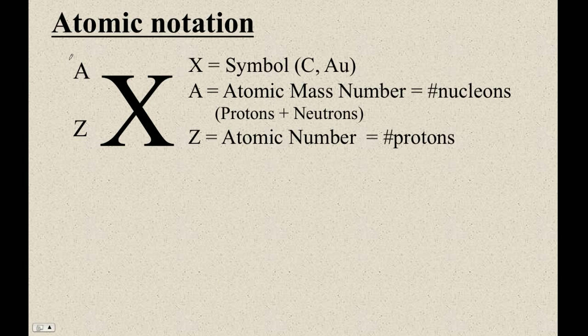Let me show you how, in physics, we write and specify a particular isotope of an atom. This is the general notation. This is the symbol of it, so really it's going to be like carbon or something like that instead of X.